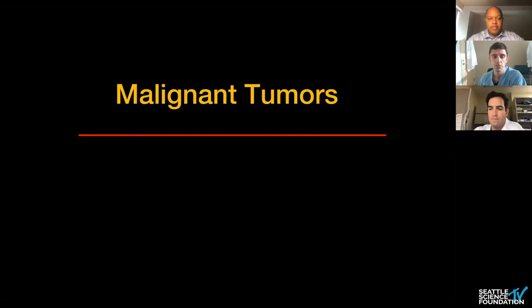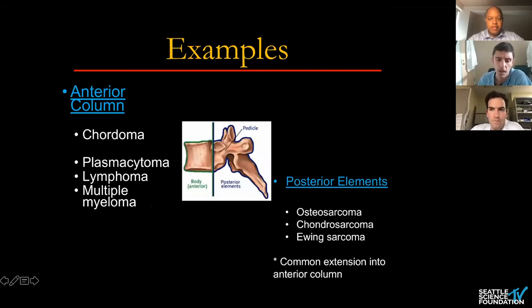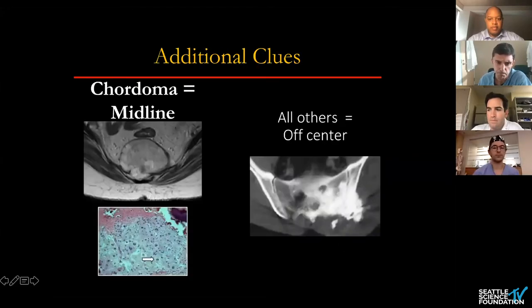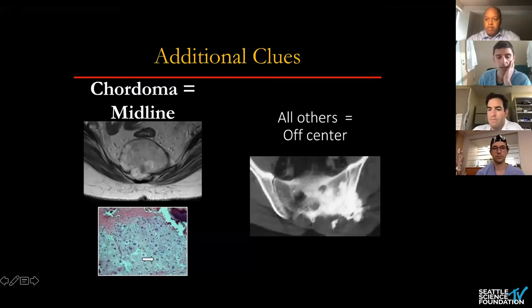Moving our attention toward malignant tumors — again, biopsy is the gold standard for diagnosing them. Chordomas, plasmacytomas, lymphomas, and multiple myeloma are most commonly in the anterior column. For posterior elements, osteosarcoma, chondrosarcoma, and Ewing's are common but can extend to the middle and anterior column. Additional clues: if you see a central midline lesion in the upper cervical or sacrum on MRI or CT, that is very suggestive of a chordoma, whereas off-center lesions are more likely to be osteosarcoma or chondrosarcoma.